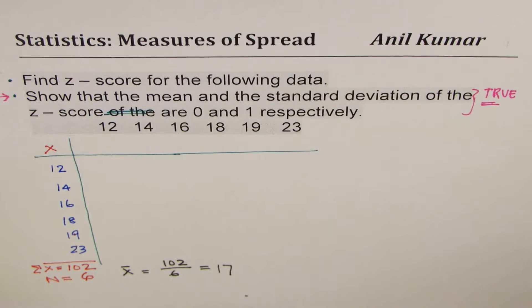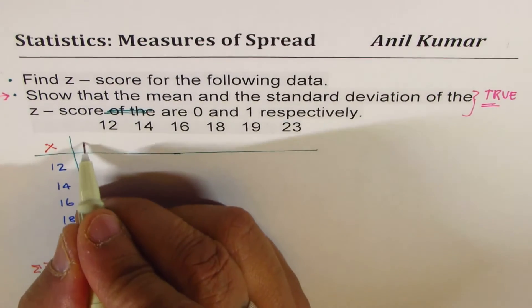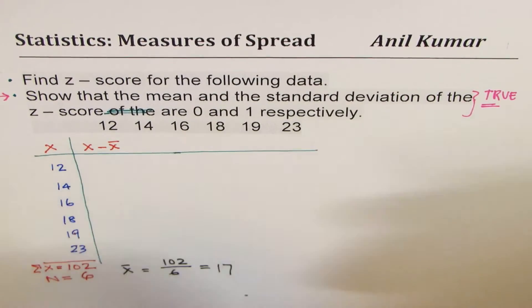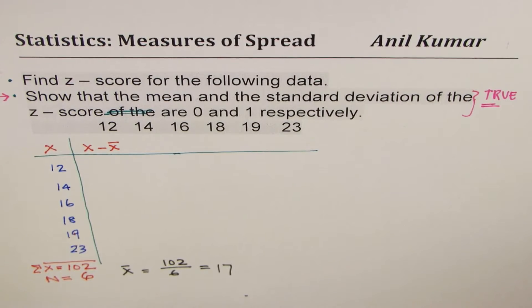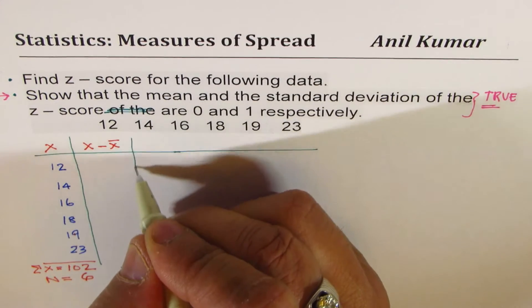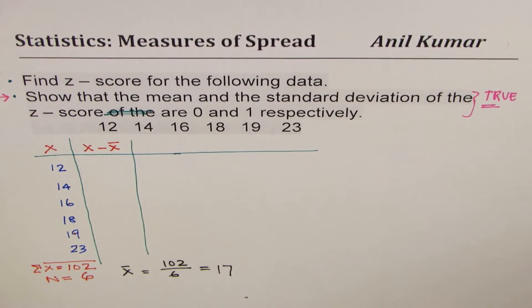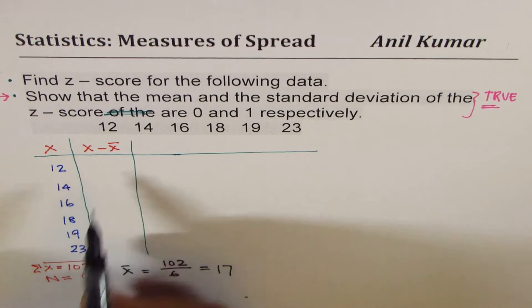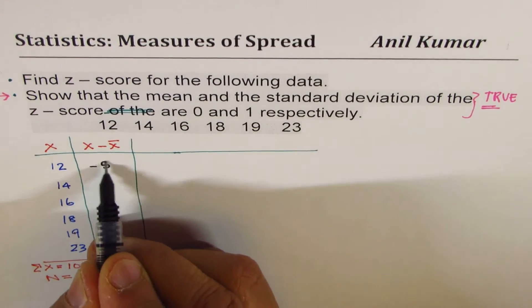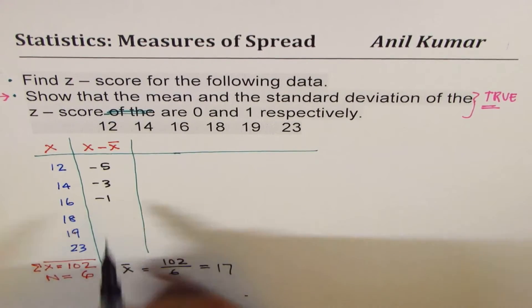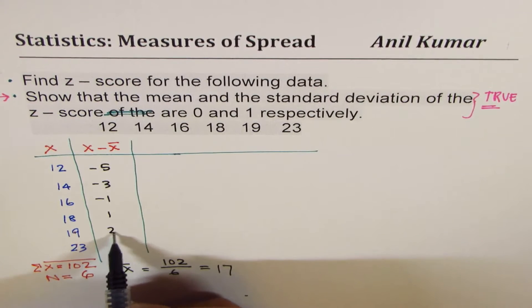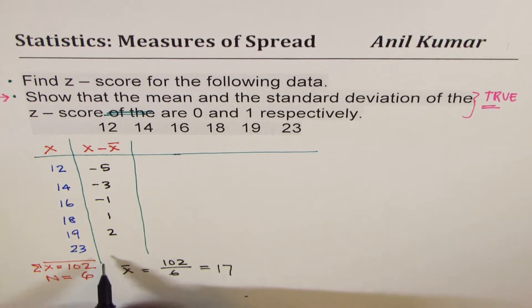Now, we can find what is x minus the mean value. So that's the second column. 12 minus 17 will be minus 5. This will be minus 3, minus 1, plus 1, 2, and that is going to be 6.